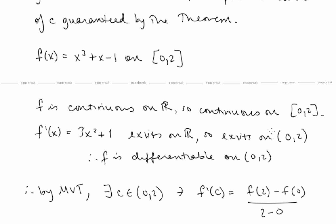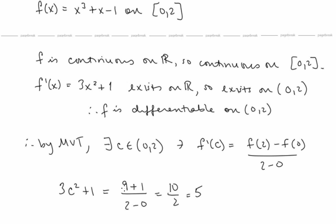Our original function is here. f(2) is going to be 8 + 2 − 1, that's 9. f(0) is equal to −1. So we have 9 minus (−1), which is 9 + 1, over 2 − 0, giving us 10/2, so we have 5. This secant slope is equal to 5. On the left-hand side we have f'(c). Since f'(x) = 3x² + 1, we have f'(c) = 3c² + 1.